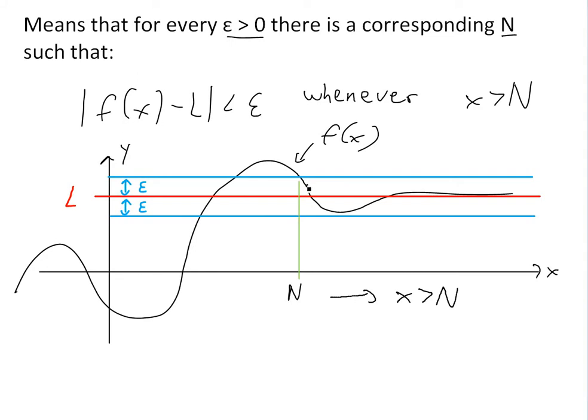So f(x) minus this limit L is going to be less than epsilon. As you can see, it's always going to be less than epsilon right here.